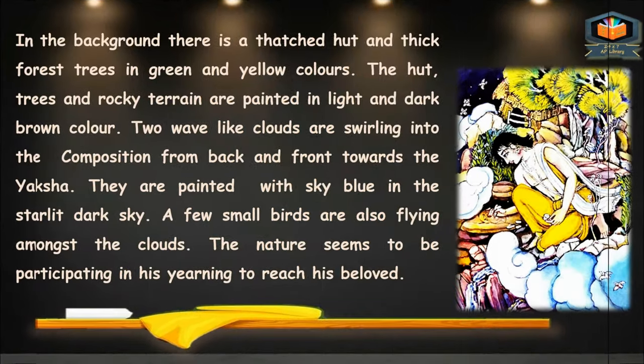In the background, there is a thatched hut and thick forest trees painted in green and yellow colors. The hut, trees, and rocky terrain are painted in light and dark brown color. Two wave-like clouds are swirling into the composition from back and front towards the Yaksha. They are painted in sky blue against the starlit dark sky.